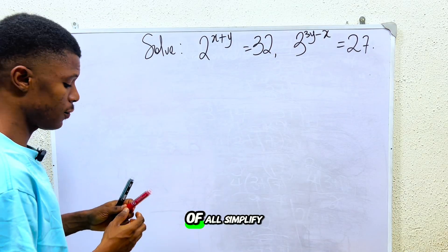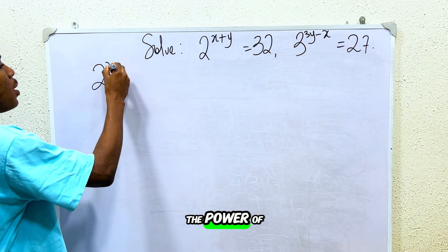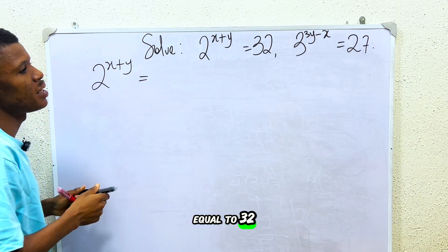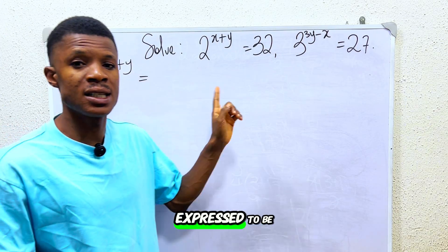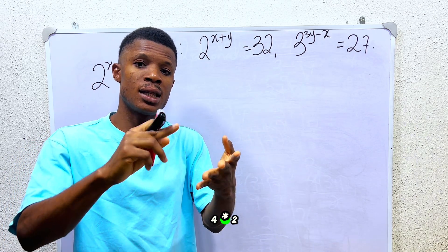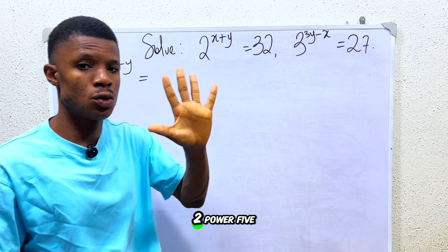So what do we do? We have to first of all simplify it. For the first term we have it as 2 to the power of x plus y is equal to 32. This can easily be expressed in base 2 because 32 is 2 times 2, 4 times 2, 8 times 2, 16 times 2, 32. That's 2 to the power 5.